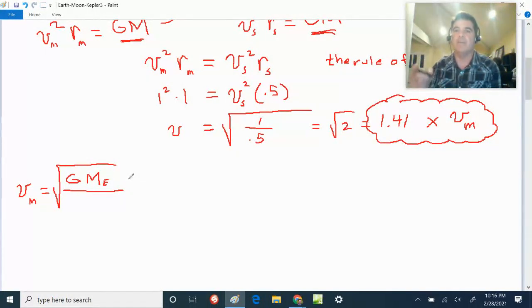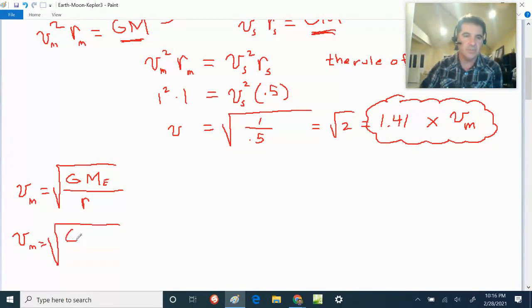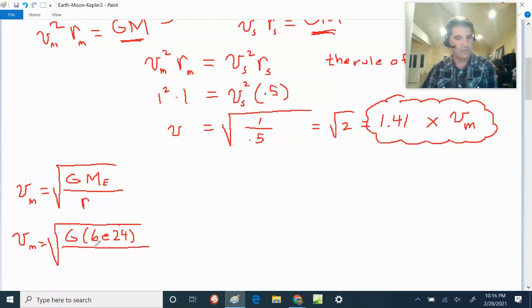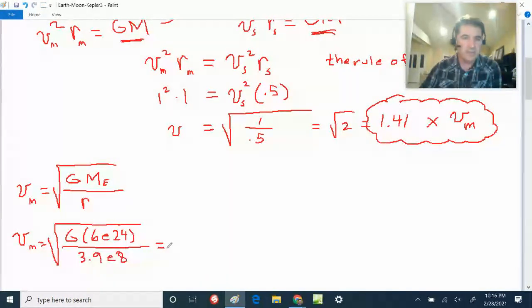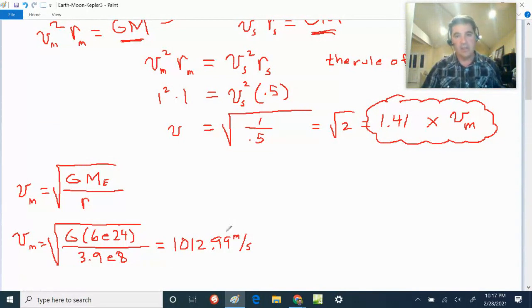The v of the moon is going to be equal to the square root of G times the mass of the earth. Remember, the mass of the satellite doesn't matter. That's the weird thing about it, right? It's not the weird thing. It's physics. The mass of the satellite doesn't matter. What does matter is the mass of the massive object that they are orbiting around. So divided by the radius. And so in this case, the velocity of the moon is going to be equal to, and I'm not going to write out G. You can, G is 6.67 times 10 negative 11. But the mass of the earth is 6E24. And that's 6 times 10 to the 24th, right? And the radius all the way out there, what was that? That was 3.9E8. And if you do this in your calculator, you get about 1012.99 meters per second.